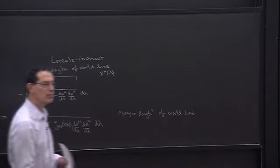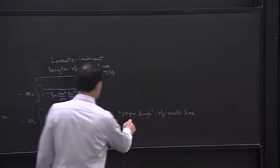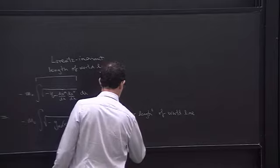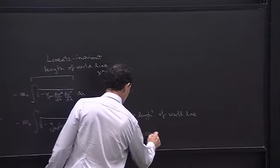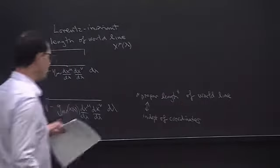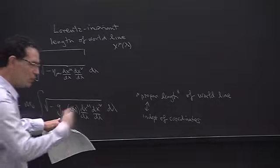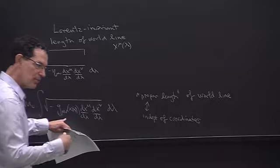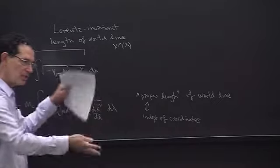When we say something is 'proper,' it means it's coordinate-independent. That's obvious because if I prime everything, g-prime equals the two inverse Jacobian matrices times g, and the dx terms transform with the Jacobian matrix, so they cancel. Isn't it amazing that the only effect of gravity is to change the geometry, and the trajectories of every particle follow the same curve obtained by extremizing the length of the world line?